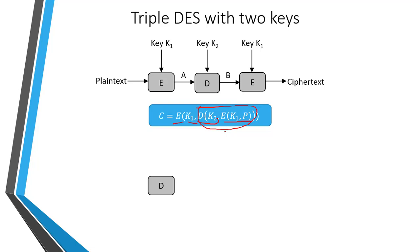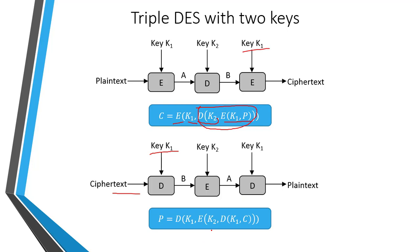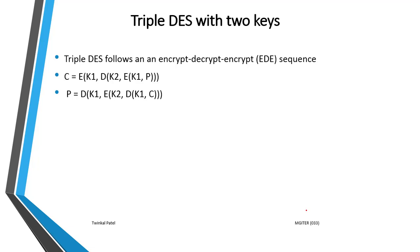On the decryption side, the reverse process (DED) is performed with keys also reversed. First, decryption is performed on the ciphertext using key K1 to generate V. Then encryption is performed on V using key K2 to generate A. Then decryption is performed on A using key K1 to generate the plain text: P = D(K1, E(K2, D(K1, C))). Triple DES follows the EDE sequence — Encrypt, Decrypt, Encrypt.